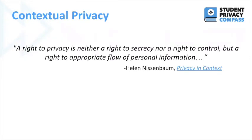Over history, privacy was often defined as control over information about you, with the distinction about private versus public information. But as the lines blur between private and public, there's a limit to what individuals can actually control. A new theory of how to think about privacy was proposed by scholar Helen Nissenbaum — this theory is about how privacy changes depending on context.